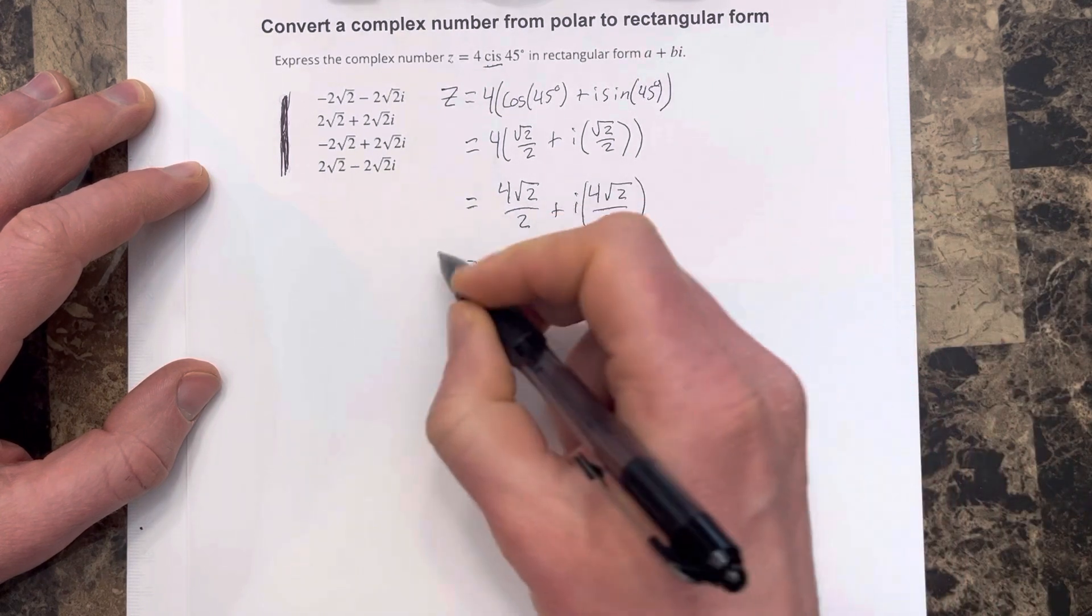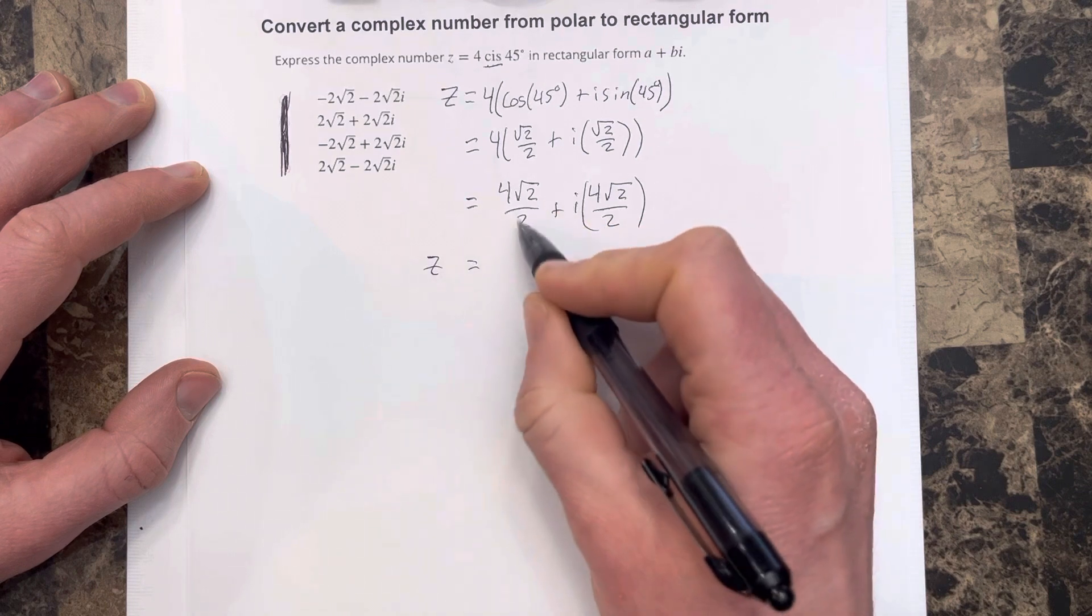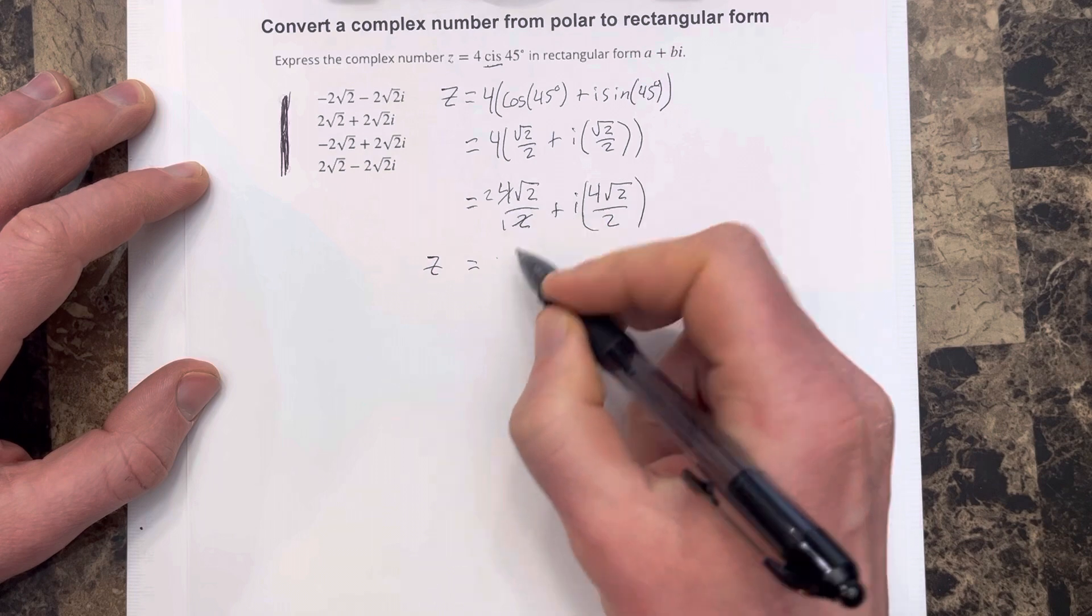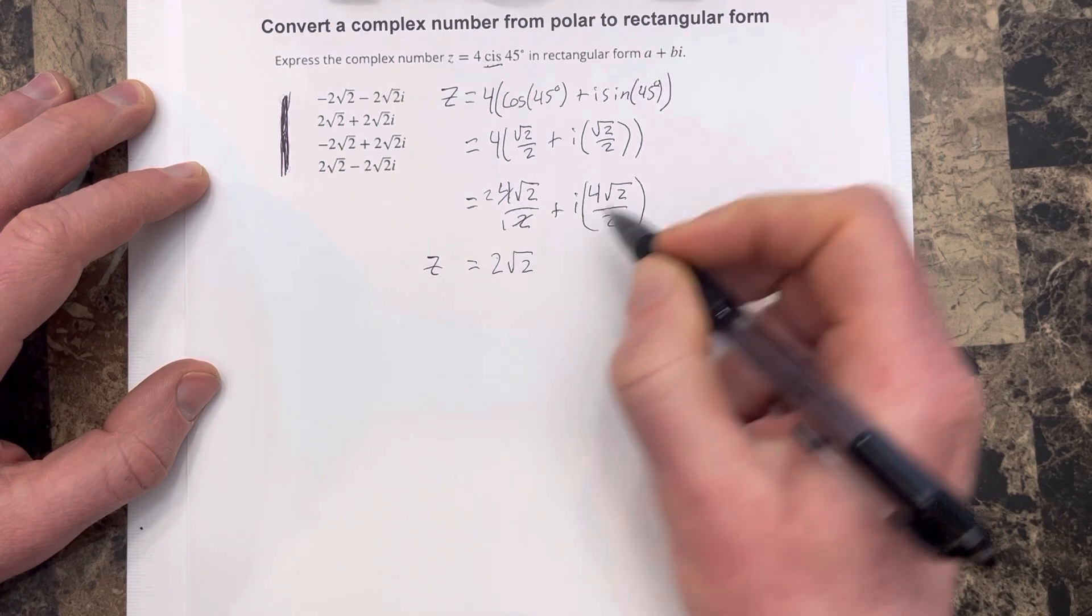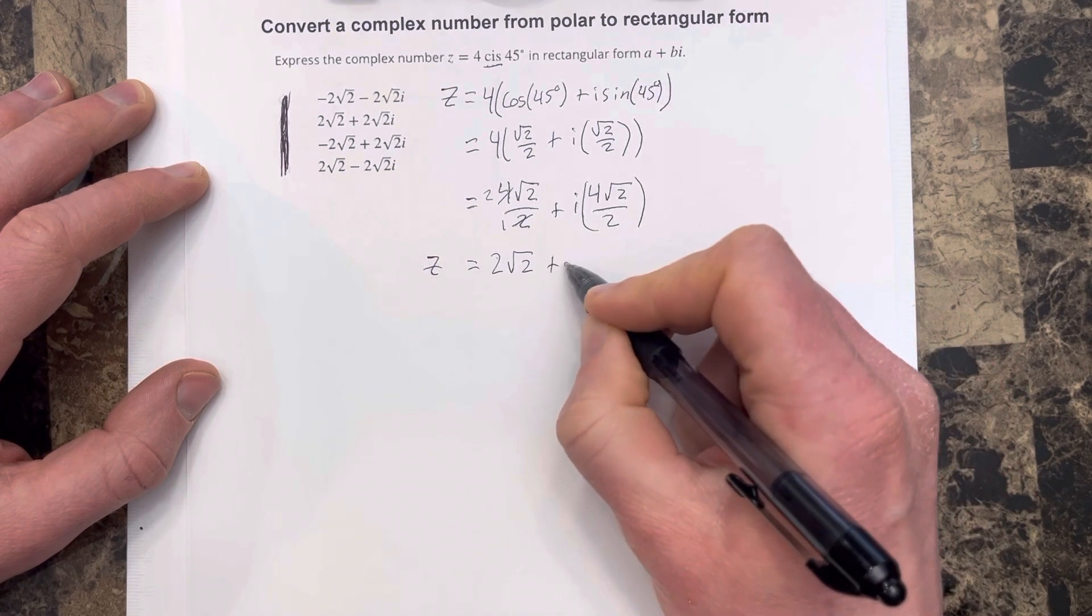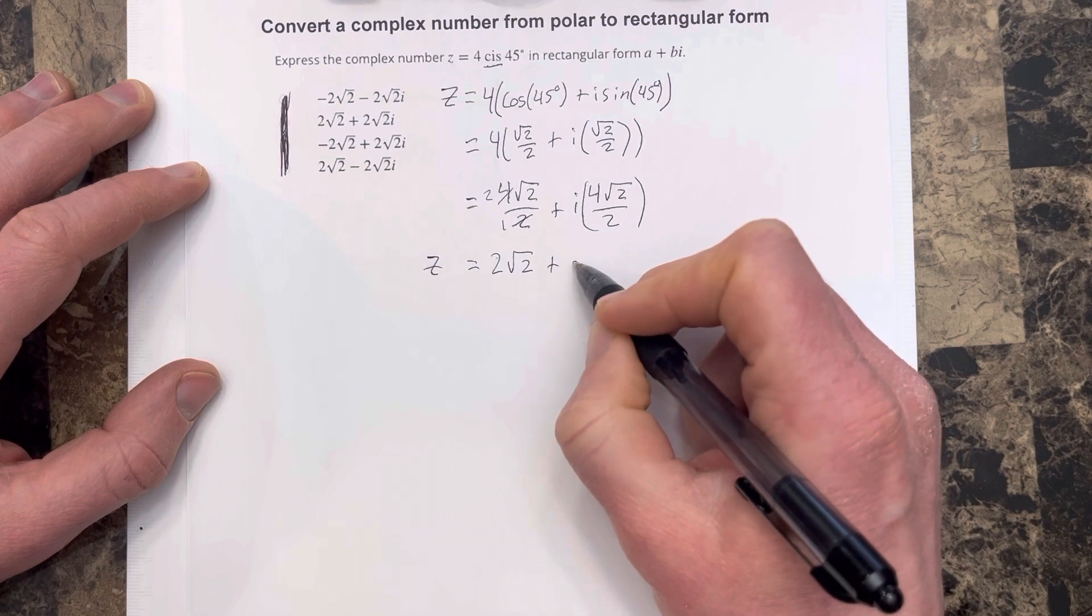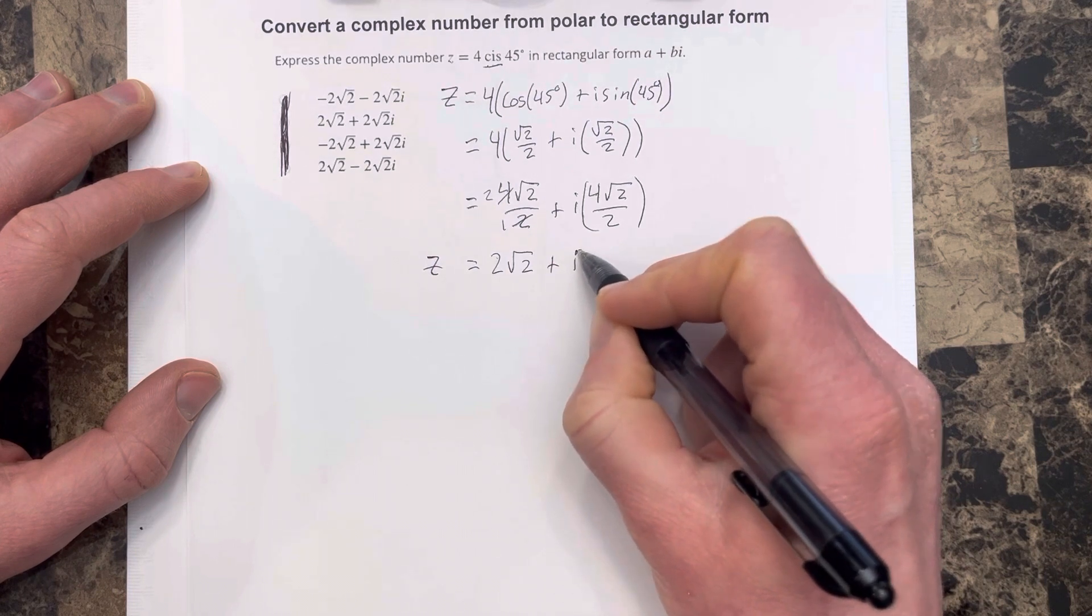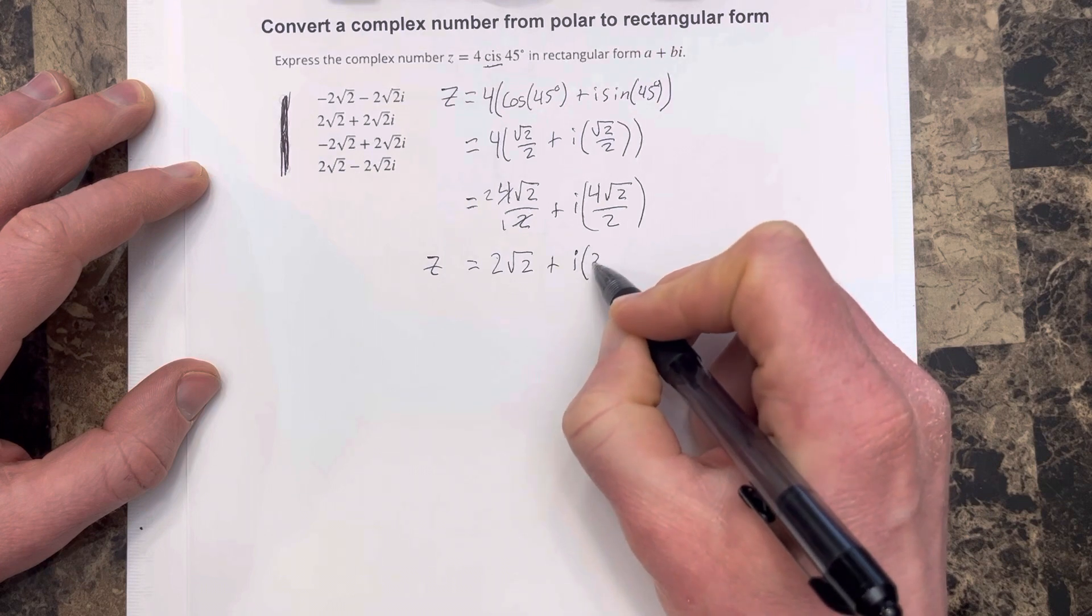We can simplify and say that that is Z equal to, divide here, we get that'd be 1 and 2, so we get 2 root 2, do the same thing here, plus we're going to say let's just write I times 2 root 2.